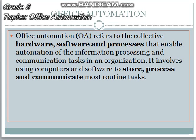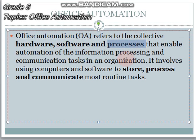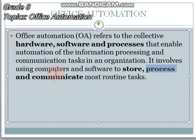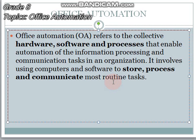Moving towards the basic definition of Office Automation: Office Automation refers to collective hardware, software and processes that enable automation of the information processing and communication tasks in an organization. It involves using computers and software to store, process and communicate most routine tasks. So if you are automating the tasks, this is what you call Office Automation. Office Automation is basically comprised of hardware, software and processes.